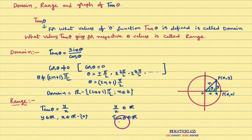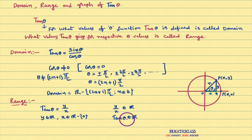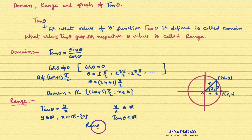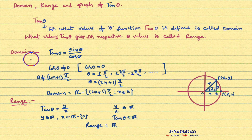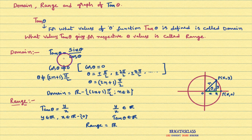What values tan theta gives is known as range of that function. Tan theta can give any real number. So what is the range of tan theta? Range of tan theta is all real numbers. What is the domain of tan theta? All real numbers except odd multiple of pi by 2. What is the range of tan theta? All real numbers.